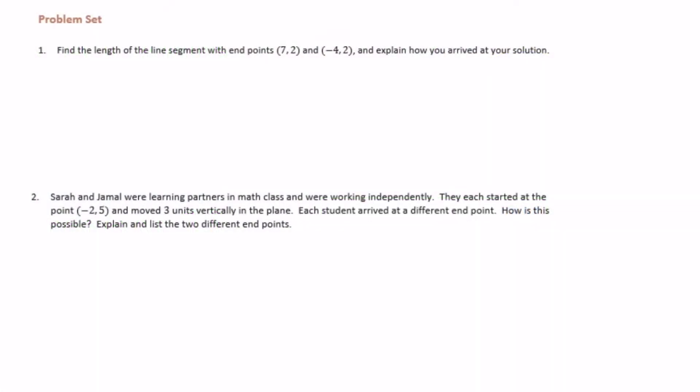Sixth grade module 3, lesson 18, problem set number one: find the length of the line segment with endpoints (7, 2) and (-4, 2), and explain how you arrived at your solution. First, we need to know what axis they are intersecting at — in other words, whether it's going to be horizontal or vertical. Let's plot them to show what I'm talking about.